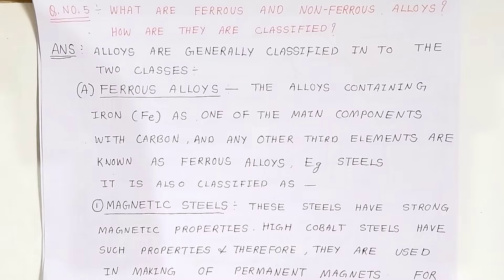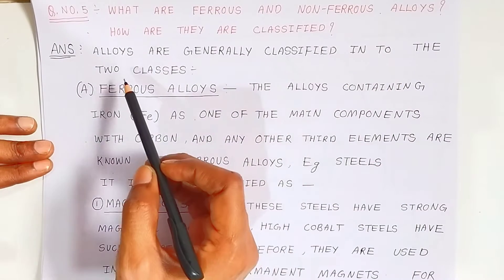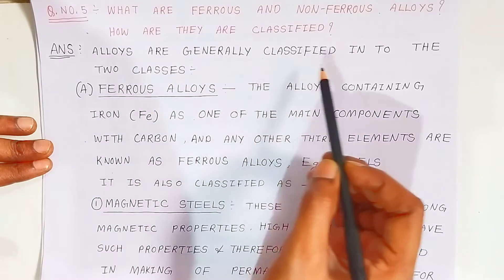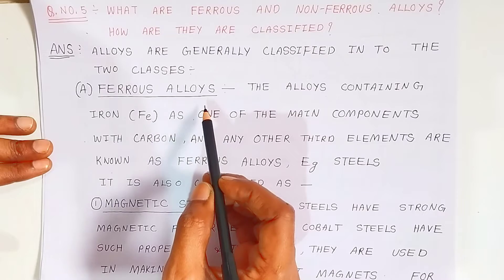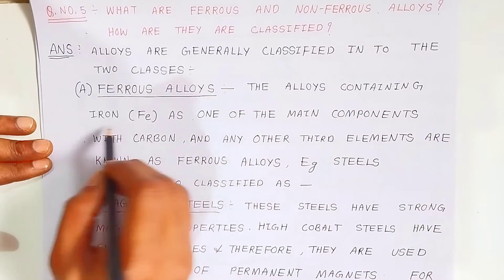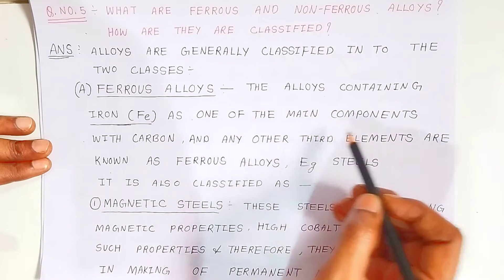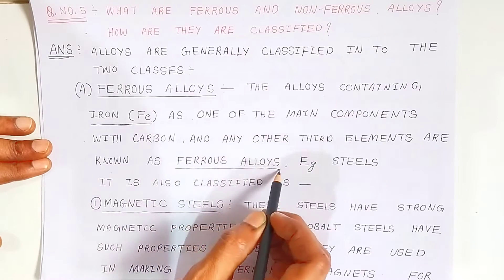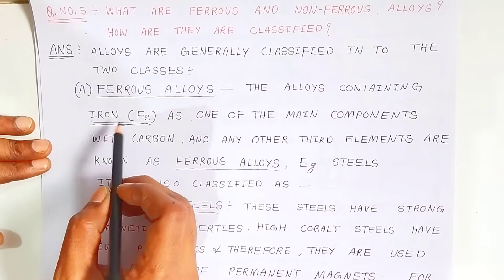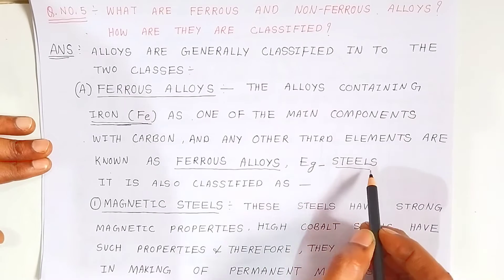In this video, we are going to see the first half of the answer — what are ferrous alloys and how they are classified. All alloys present on earth are classified into two categories: ferrous alloys and non-ferrous alloys. Ferrous alloys are alloys containing iron as one of the main components, along with carbon and other elements. Steel is one of the most important examples of ferrous alloys.